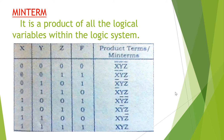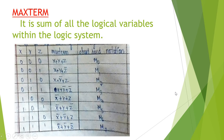Next, maxterm. What is maxterm? It is the sum of all the logical variables within the logic system. In this logic system, x, y, z are the logical variables. But in maxterm, x is zero means x itself. One means we represent it as x-bar. That is the difference — in maxterm, zero means x, and one means x-bar.